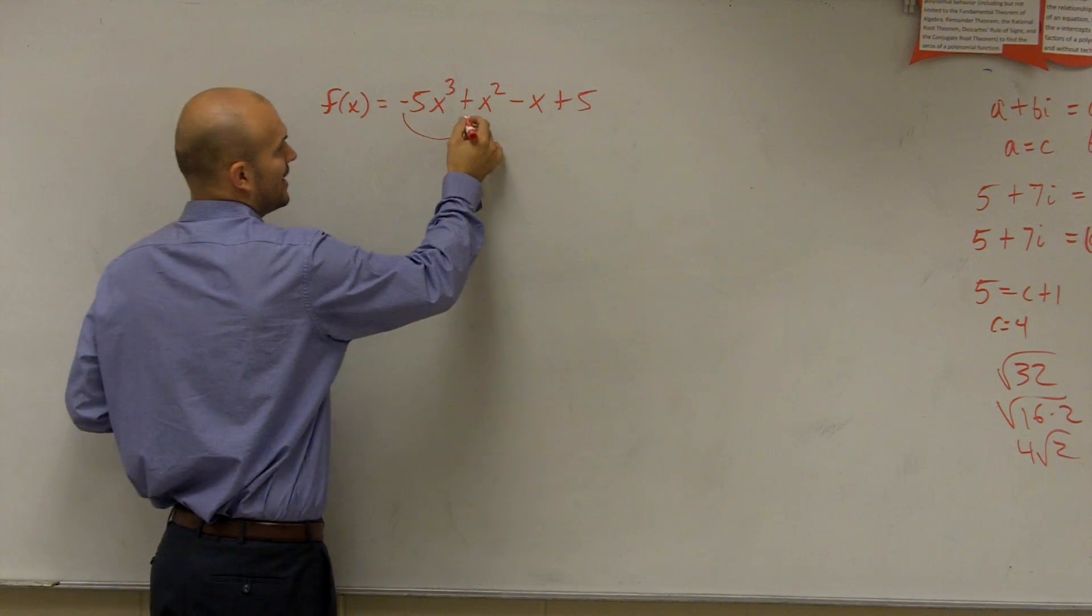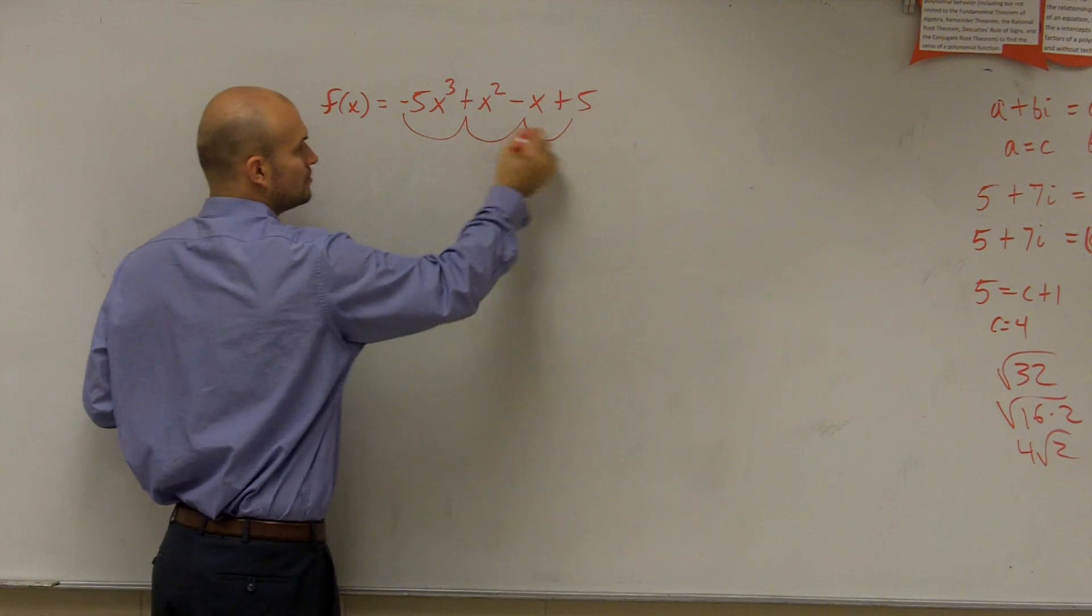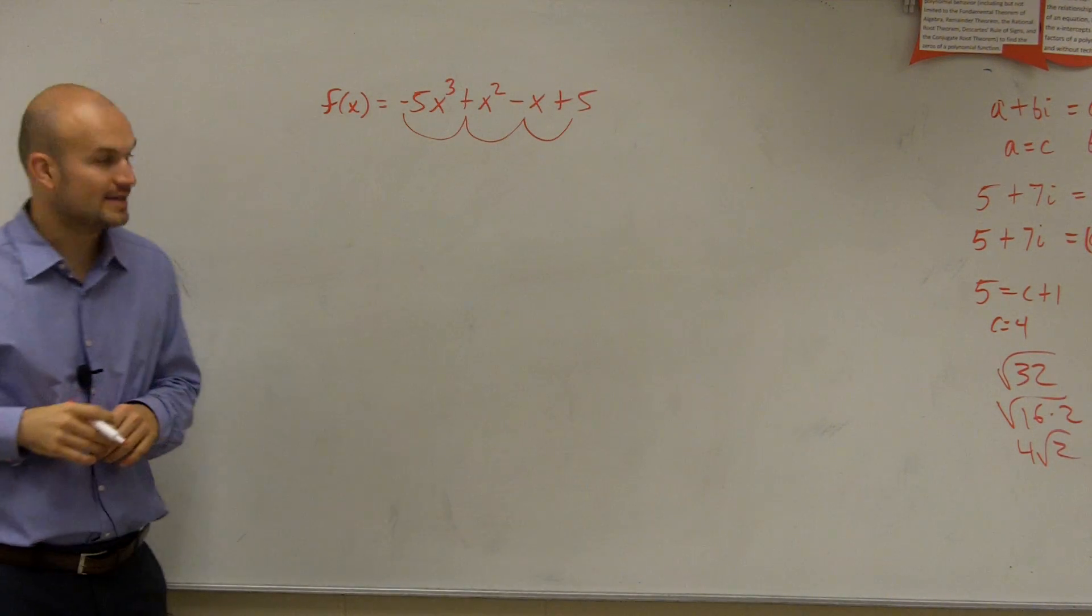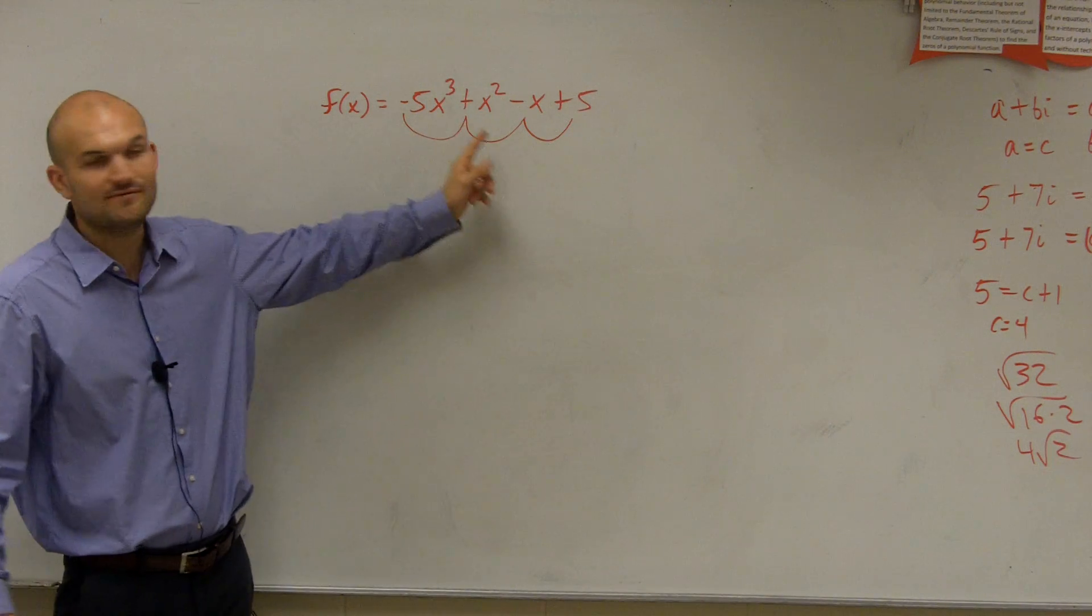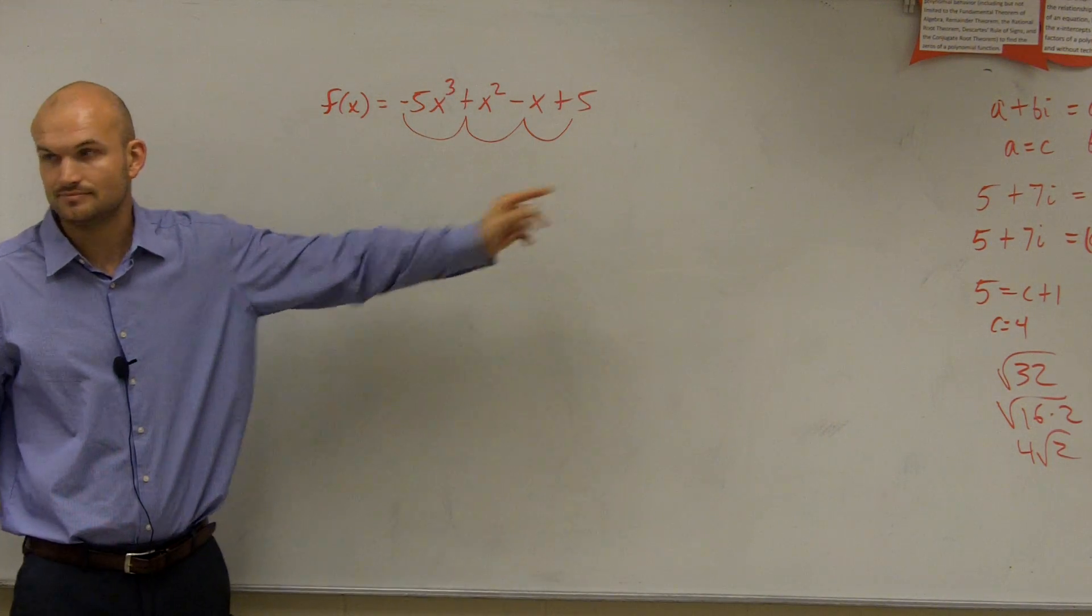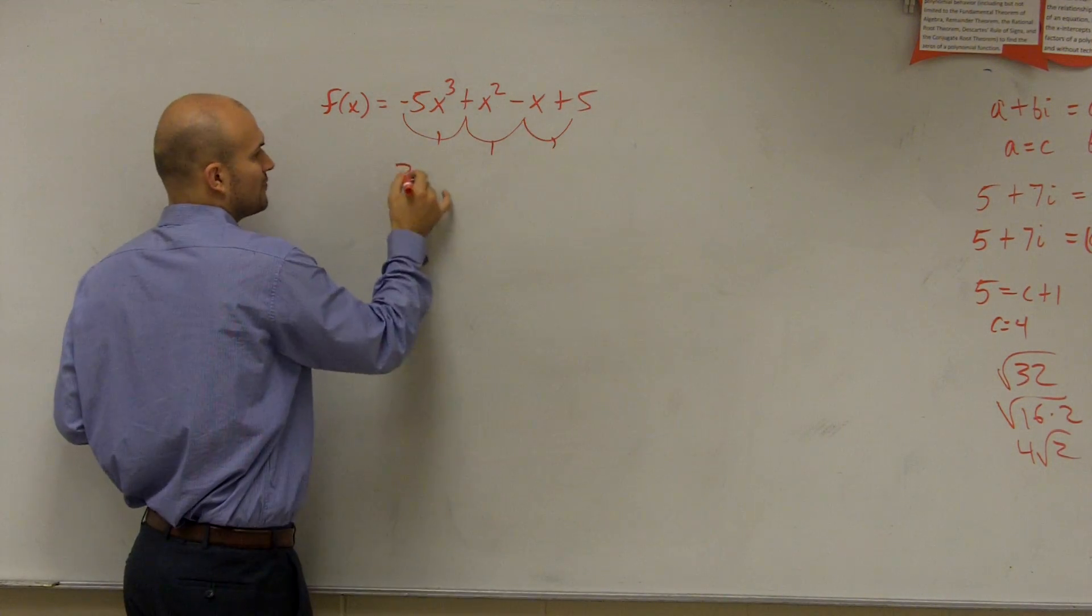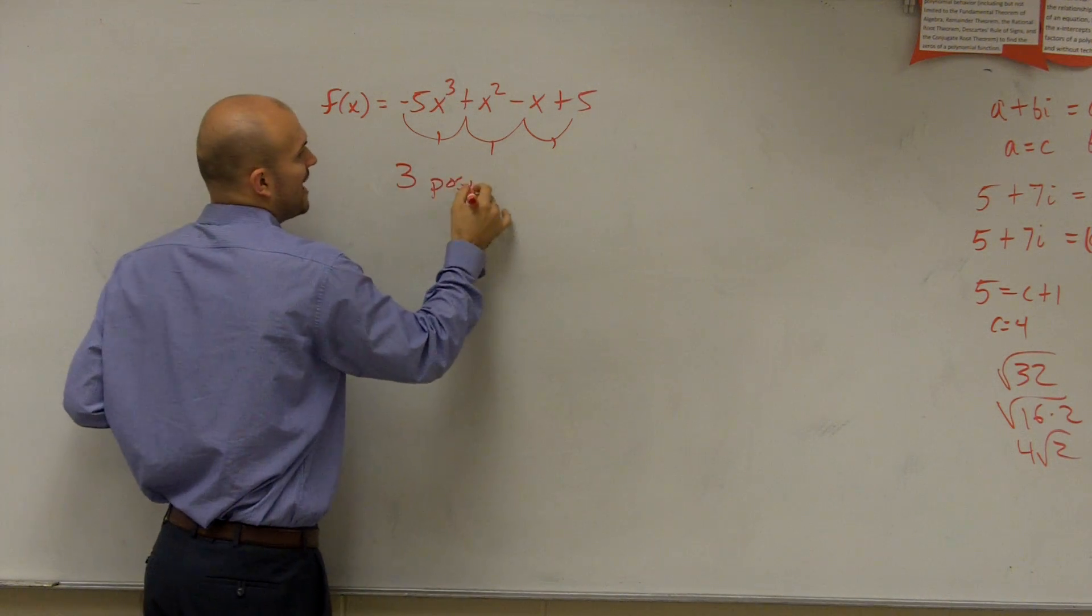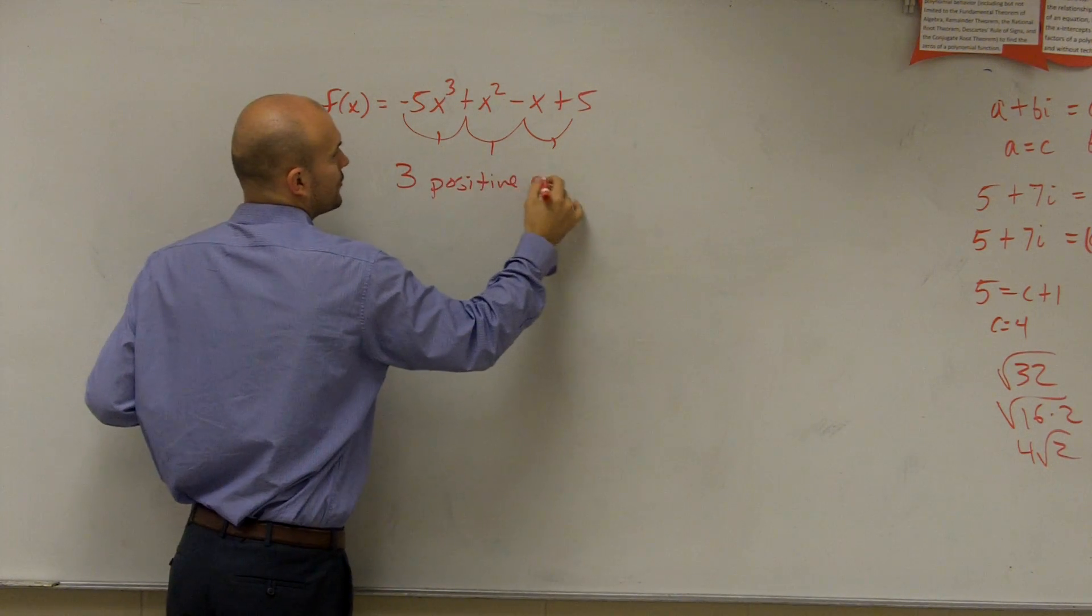Yes. Then I go from a positive again to a negative, then a negative to a positive. So you can see I have three variations in a sign, correct? So therefore, I have a possible of three positive real zeros.